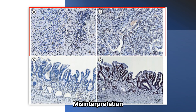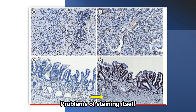17 out of 37 concordant cases were cases in which the interpretation of staining was incorrect, as shown in the figures. In 12 cases, the staining itself was not well done, showing a difference from slides stained with another block of the same tissue. The remaining 8 cases showed a total loss of expression for proteins other than MLH1.